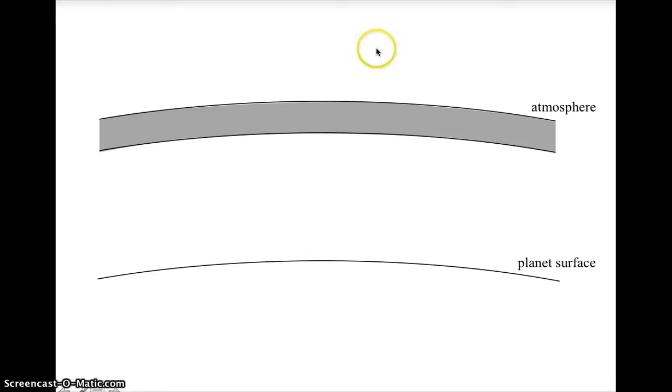You have the surface down here, and up here there's an atmosphere. In reality, the atmosphere extends all the way down to the surface, but we're going to pretend the atmosphere is just this chunk on top.